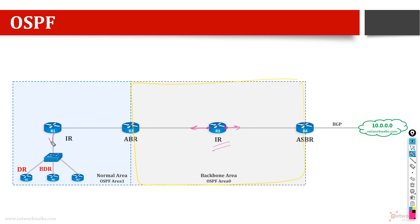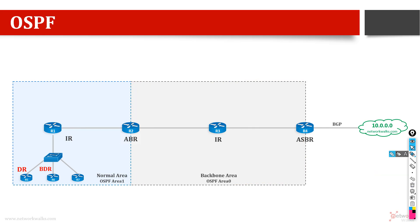Similarly, router number one also has all its interfaces within the same area — it is also an internal router. Router five has one port within the same area, also called an internal router. Router six and router seven are also internal routers. So this is the internal router type.